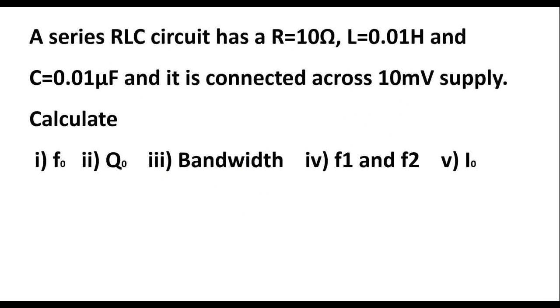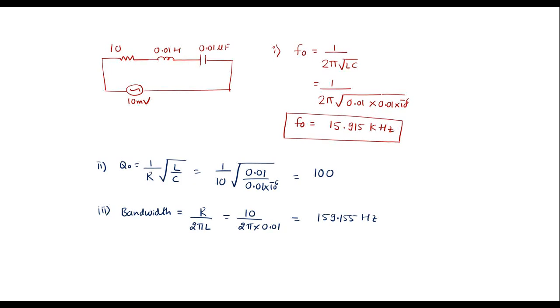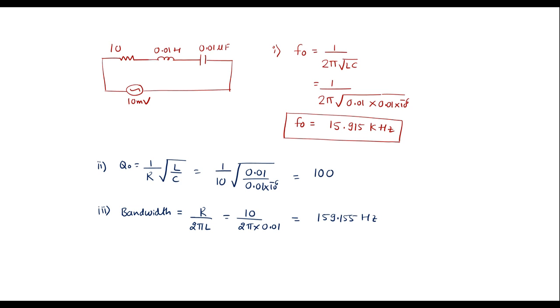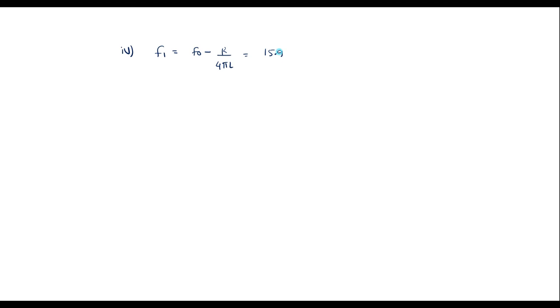Now let me calculate f₁ and f₂. f₁ and f₂ are the half power frequencies. The formula for f₁ is f₀ minus R / 4πL. f₀ we already calculated is 15.915 × 10³ minus 10 divided by 4π × 0.01.